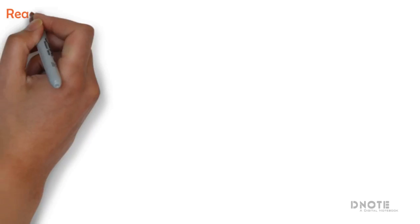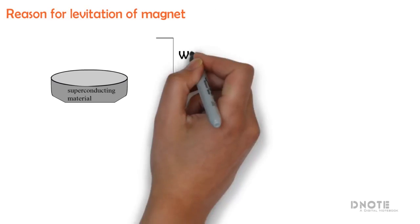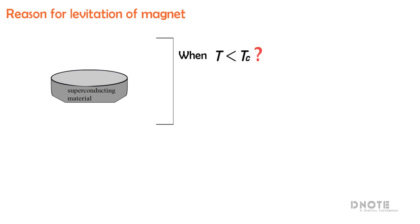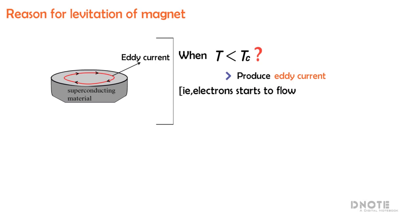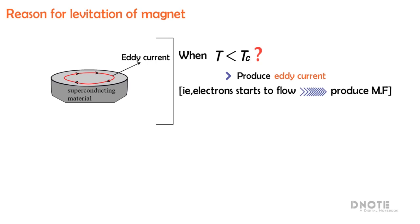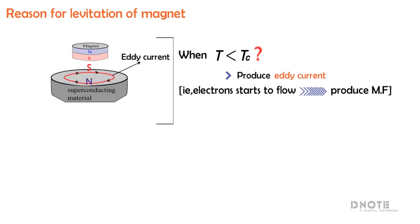Now let us move on to the reason for the levitation of the magnet — what happens to the superconducting material as the temperature drops below the critical temperature. As the temperature drops below the critical temperature, it starts to produce a little eddy current. That is, electrons start to flow in such a way that they produce a magnetic field, creating a south pole on top and a north pole below. Because the south pole is produced on top of the surface of the superconducting material, it repels the south pole of the magnet that is above it.